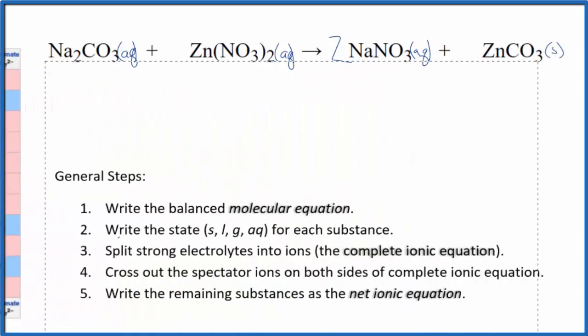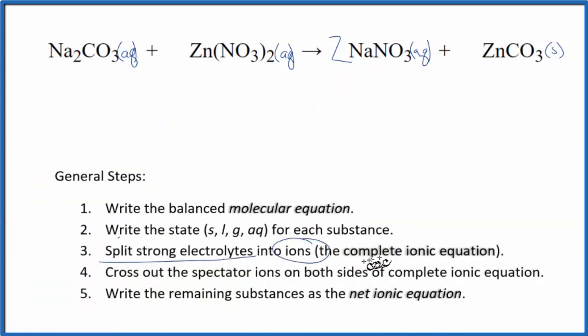So we have our states. Now we can split the strong electrolytes into their ions. This is the complete or total ionic equation. So sodium's in group one, that'll have a one plus ionic charge. And the whole carbonate ion, two minus. Good one to remember. So we have two of these sodium ions, and then we have the carbonate ion. And I won't write the states right now, let's write those at the end.